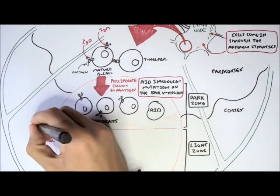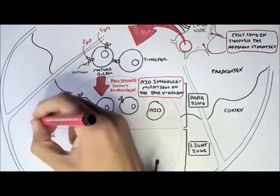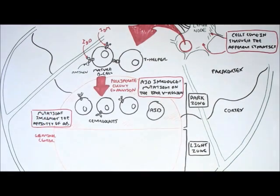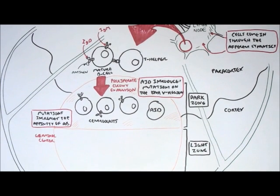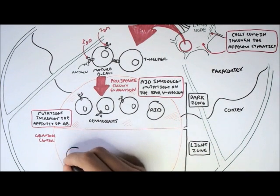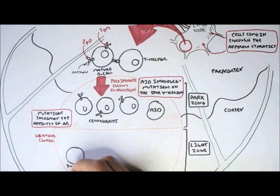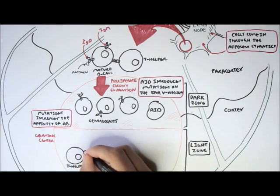And so these mature B-cells, through proliferation and hypermutation, will create many types of centroblasts with an increased affinity or a decreased affinity for the particular antigen that stimulated the activation of the mature B-cell in the first place.